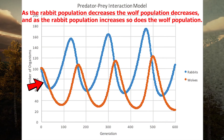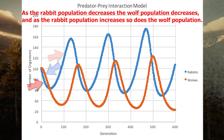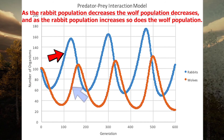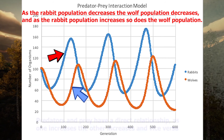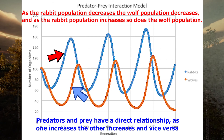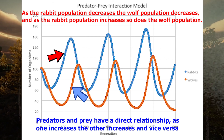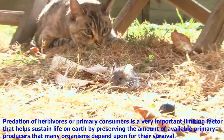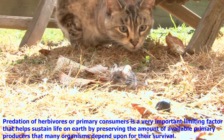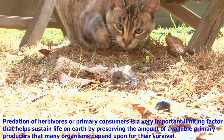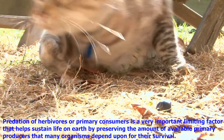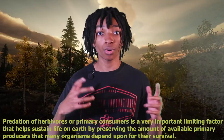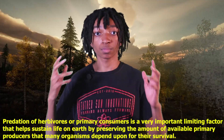Take a look at the predator-prey graph. Notice that as the rabbit population increases, the wolf population also increases, and vice versa. Predators and prey have a direct relationship — as one increases, the other increases as well. Predation of herbivores is a very important limiting factor that helps sustain life on Earth by preserving the amount of available primary producers that many organisms depend on for their survival.